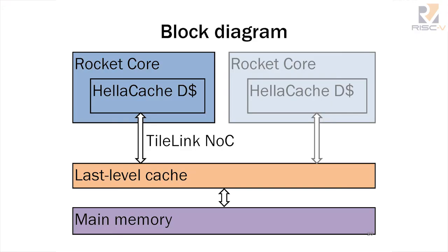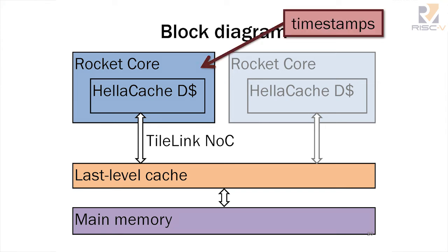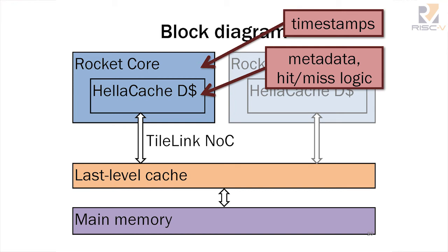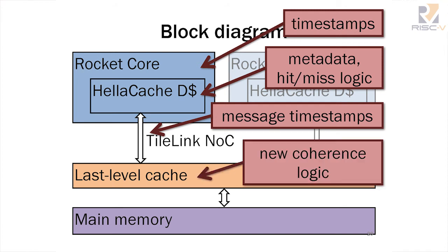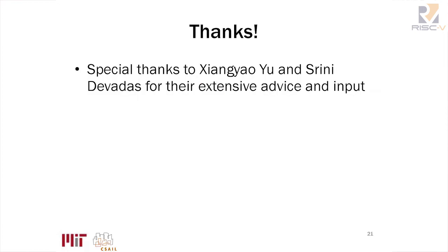We've been implementing this prototype using the Rocket Chip repository. In the Rocket core we added timestamps like ts_min and ts_max; in the HellaCache we added metadata and hit/miss logic; we augmented the TileLink on-chip network to support transmitting message timestamps; and in the last-level cache we added new coherence logic, including removing broadcast invalidations since we no longer use them. I'd like to thank Srini and Zhang Yao for their advice and input.